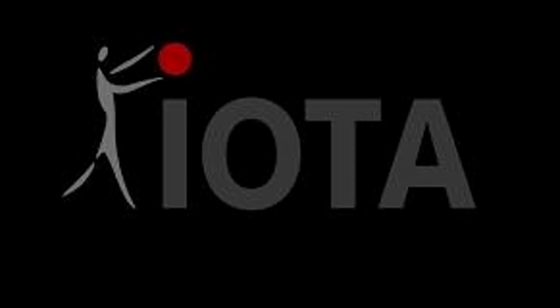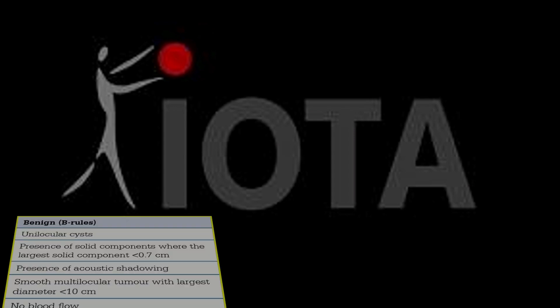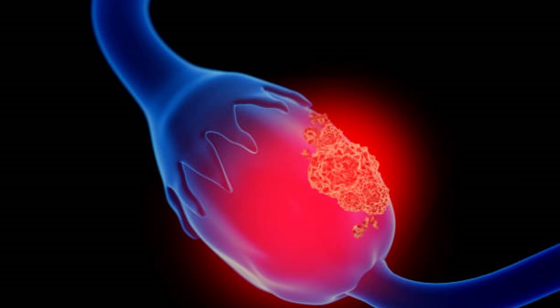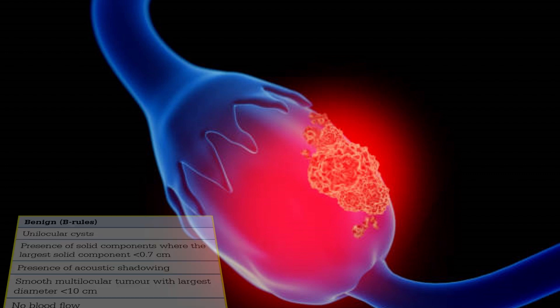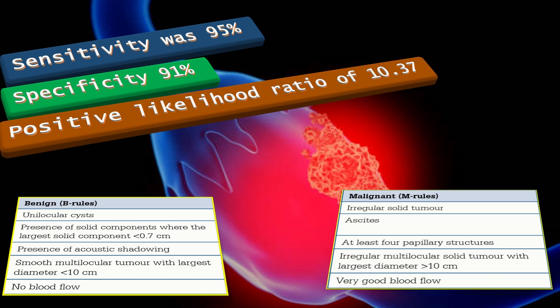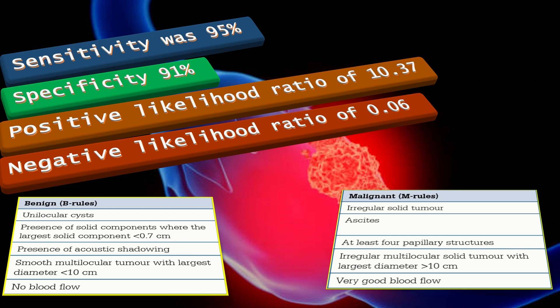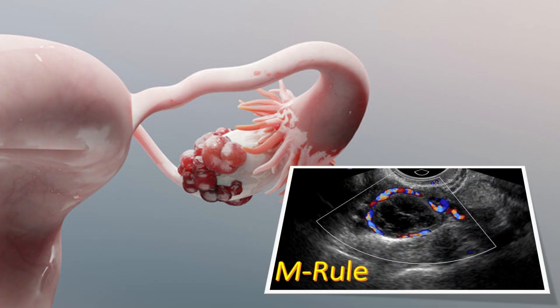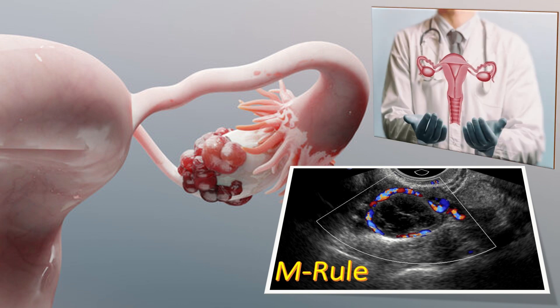Using data derived from the IOTA group, 3,851 simple ultrasound rules were developed to help classify masses as benign with the B rules or malignant with the M rules. The reported sensitivity was 95%, specificity 91%, positive likelihood ratio of 10.37, and negative likelihood ratio of 0.06. Women with an ovarian mass with any of the M rule ultrasound findings should be referred to a gynecological oncological service.